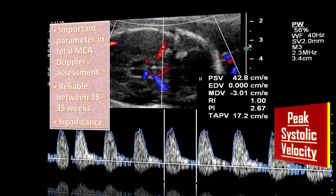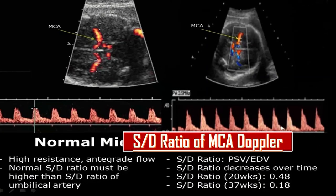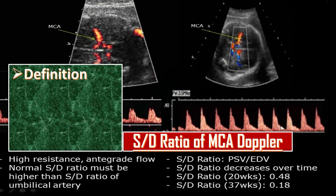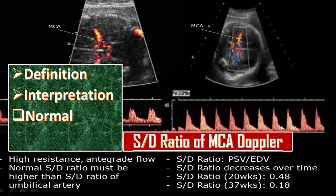What is the S/D ratio? The fetal MCA S/D ratio is an important parameter in fetal MCA Doppler assessment and is a useful predictor of fetal distress and intrauterine growth restriction. The normal value will vary by institution, but a normal fetal MCA S/D ratio should always be higher than the umbilical artery S/D ratio. A reduced S/D ratio is abnormal and implies increased diastolic flow in the middle cerebral artery. Loss of the high resistance waveform is also an indicator of fetal distress or IUGR.